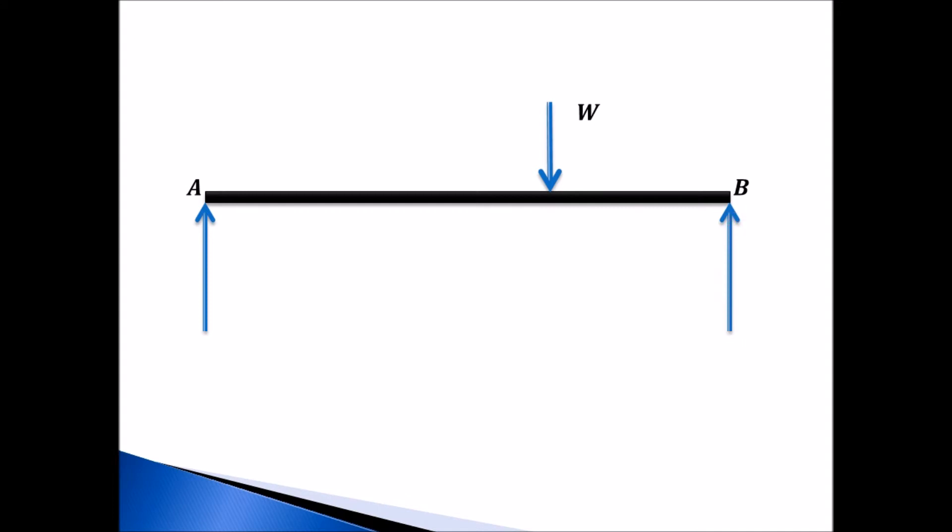The support will offer reaction in the upward direction and these reactions are supposed RA and RB. It is also subjected to the load W acting in the downward direction. So RA and RB are the reactions. Suppose the load is acting at a distance of a from the left hand support. This is the left hand support. From the left hand support this distance is a.